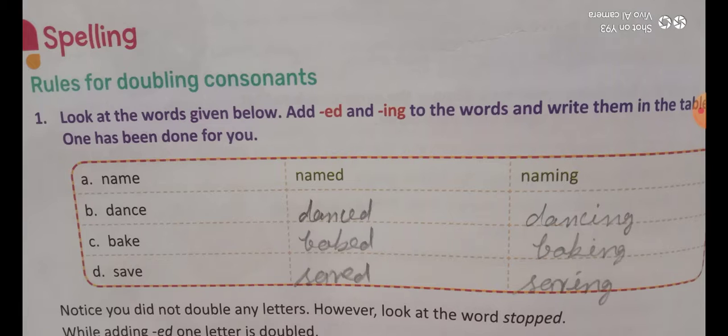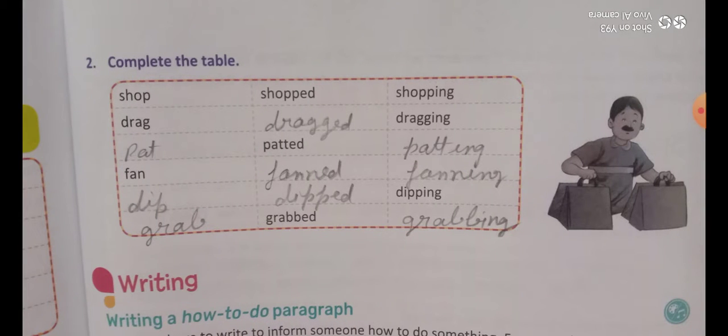In this exercise — rules for doubling consonants — look at the words given below, add -ed and -ing to the words and write them in the table. One has been done for you. Number two: dance — d-a-n-c-ed, danced; d-a-n-c-ing, dancing. Bake — b-a-k-ed, baked; b-a-k-ing, baking. Save — s-a-v-ed, saved; s-a-v-ing, saving.